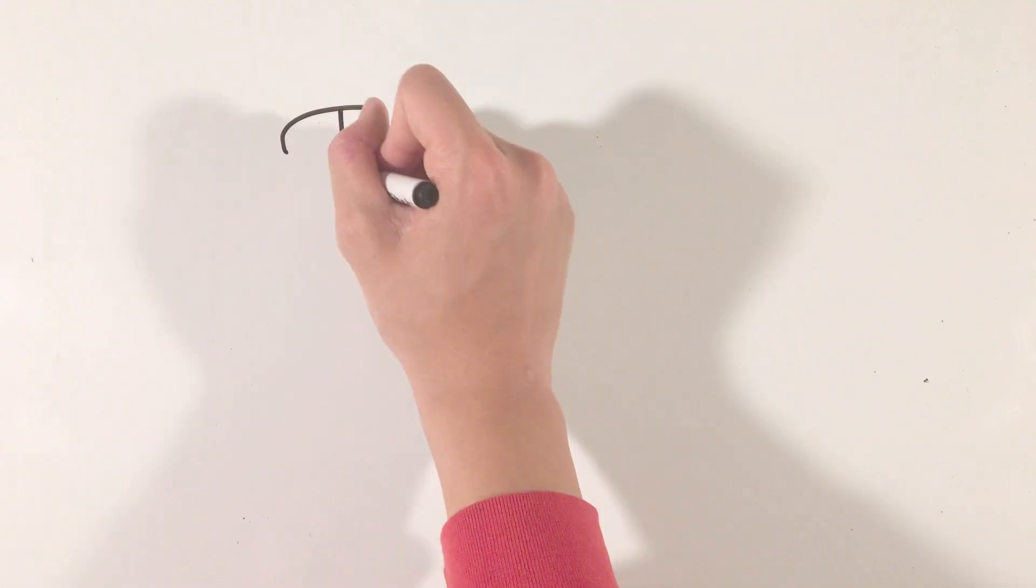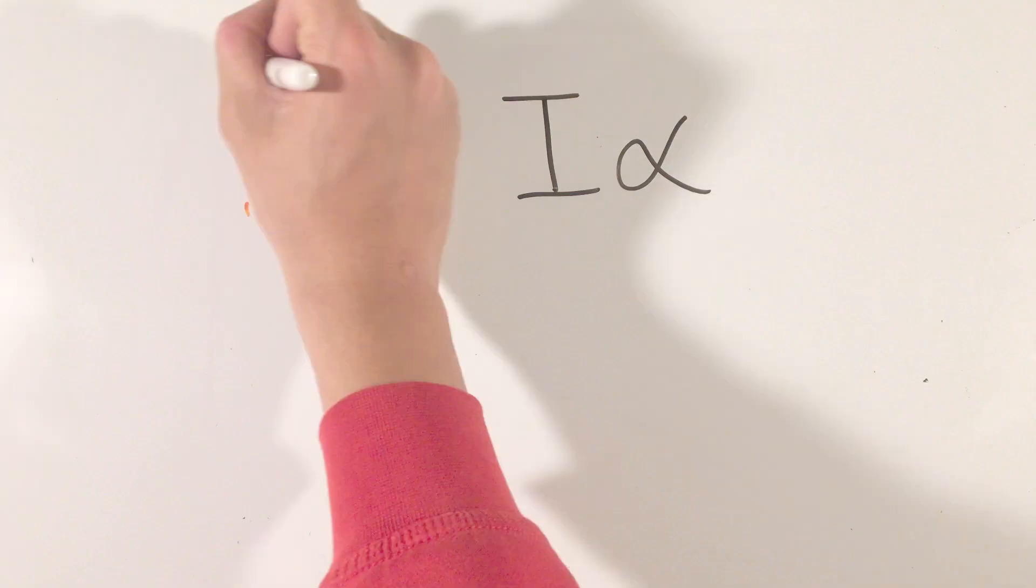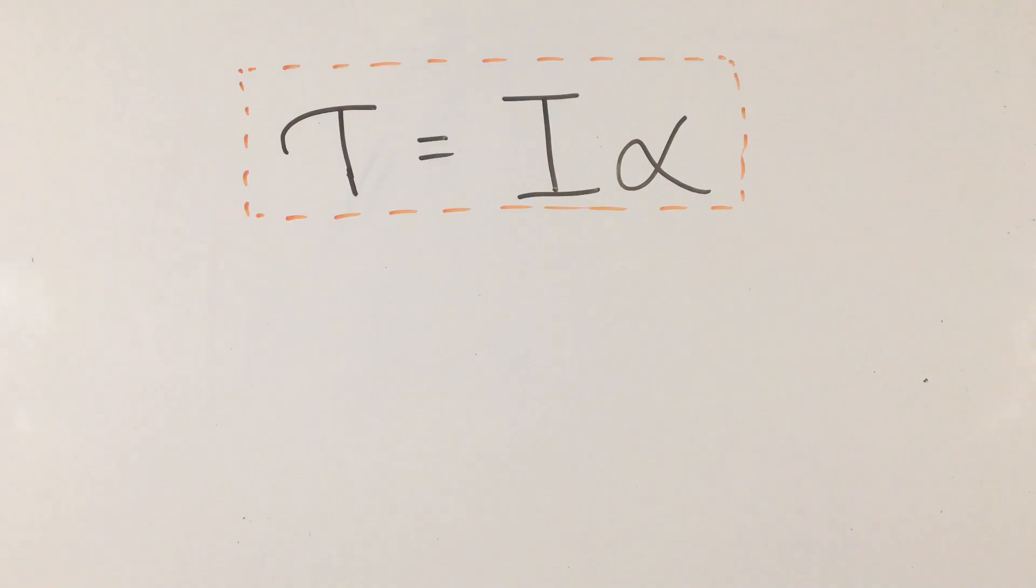Finally, the equation linking torque and moment of inertia is that torque is equal to the moment of inertia times the angular acceleration of the object. In essence, this will act as the Newton's second law of the rotational world. It has your twisting and turning force, your rotational resistance mass, and your angular acceleration.